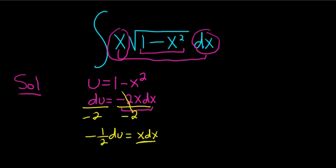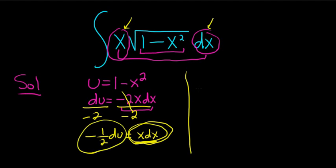And now we have here exactly what's in the integrand. So we can make our substitution. The x and the dx can be replaced with negative 1 half du. So negative 1 half and then du. All that's been replaced so far is just the x and the dx.